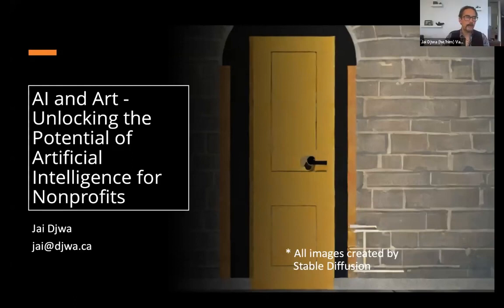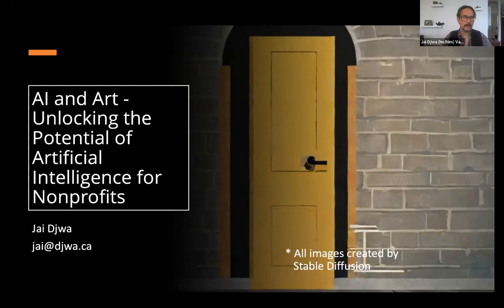So I'm going to be talking about AI and art — unlocking the potential of artificial intelligence for non-profits. All the images, of course, were generated by an AI art process. I use Stable Diffusion, and I'll talk a little bit more about that in a moment.